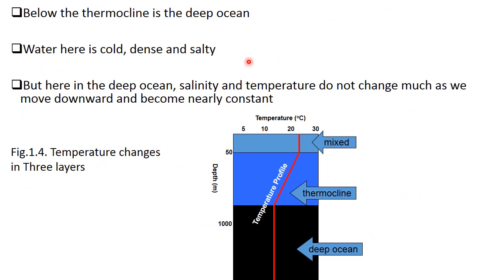Below the thermocline is the deep ocean. Water here is cold, dense, and salty. In the deep ocean, salinity and temperature do not change too much as we move downward and become nearly constant. Figure 1.4 shows temperature changes in the three layers.